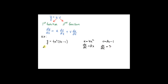Therefore, dy/dx of the product equals: first, copy down the first function, that is 4x², multiplied by the differential of the second function, which is 3, plus copy down the second function (3x - 1) times the differential of the first function, that is 8x. Next, we simplify: 4 times 3 gives 12x², plus 3x times 8x gives 24x², and negative 1 times 8x gives negative 8x.